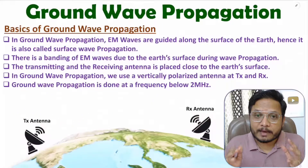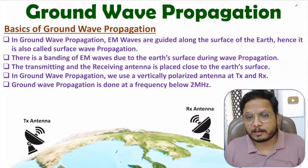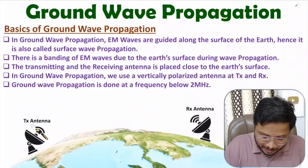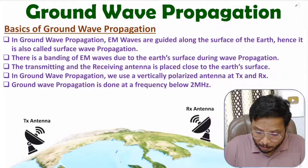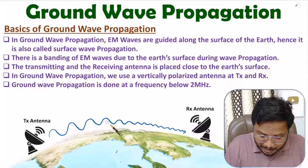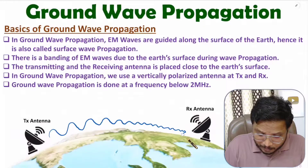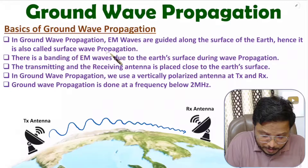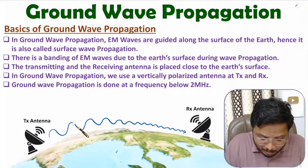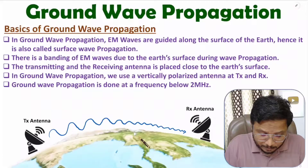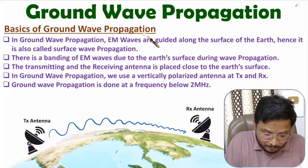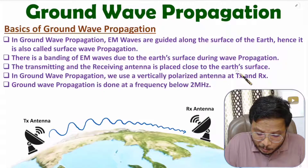In ground wave propagation, EM waves are guided along the surface of earth — that's why it is also known as surface wave propagation. Here we have a transmitting antenna and a receiving antenna, and the EM waves are guided along the curvature of earth's surface. During propagation, there will be bending of the EM wave with respect to the surface of earth.